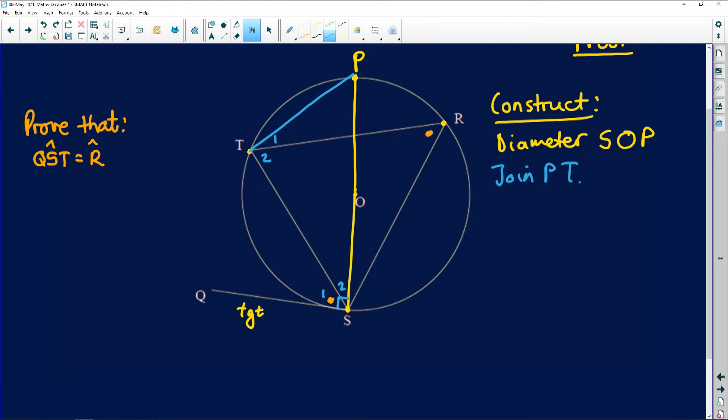Now we can start our proof. Our proof from this construction: angle S1 plus angle S2 is 90 degrees, and the reason is the radius or the diameter in this case is perpendicular to the tangent at this point S. But what else do we know? We also know that angle T1 and T2 - angle T1 plus angle T2 - is also 90 degrees. That's the angle in a semicircle.